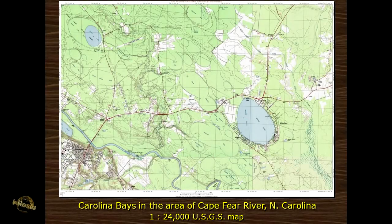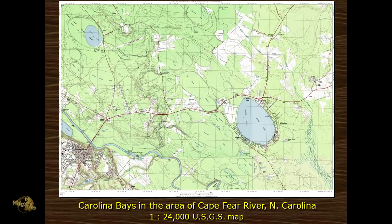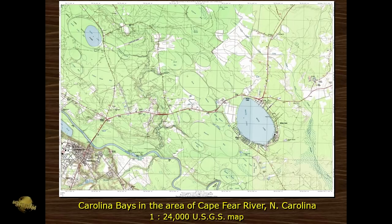Here is a geological topo map and you can see how many bays there are. Some of them have lakes, but the original bay is filling up with peat. Probably in another thousand years, that will not exist as a lake anymore - it will just be a swampy, peaty area.